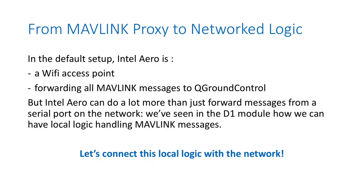By default, Intel Aero is broadcasting a Wi-Fi access point. You can connect to Aero and do some local connections, but you have no internet access. All the Mavlink messages are forwarded from the drone to QGroundControl running on a laptop or computer, this computer being connected to the Wi-Fi access point.